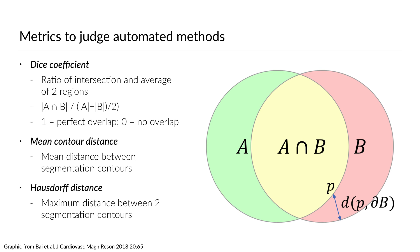Another important metric is the mean contour distance, which gives you the mean distance between segmentation contours — the contour drawn by a human expert versus the computer. This is an often reported metric in papers about this topic. Another derivative is the Hausdorff distance, which is the maximum distance between two segmentation contours. So when you read these terms, now you know what they mean.